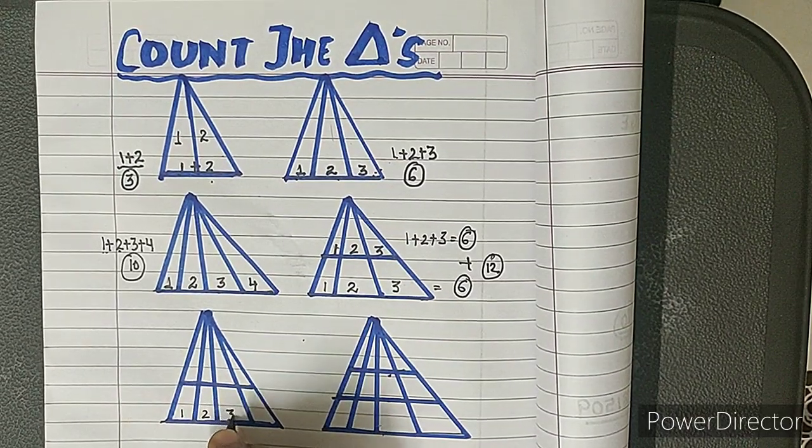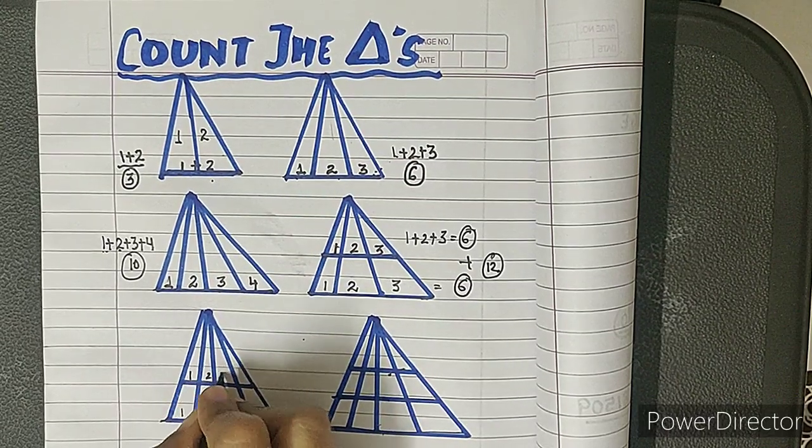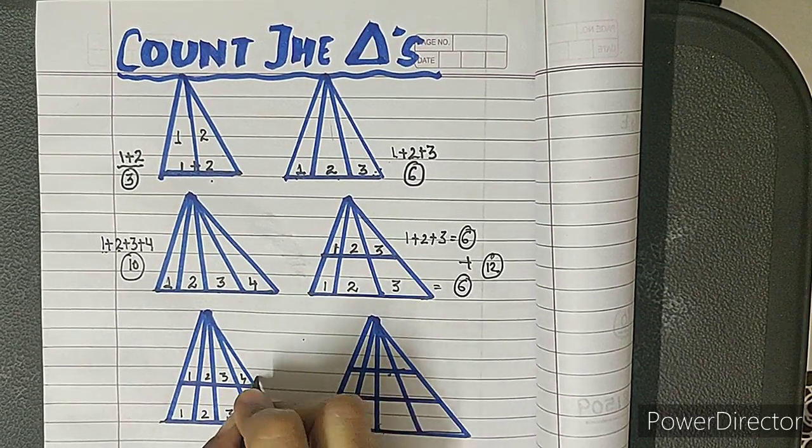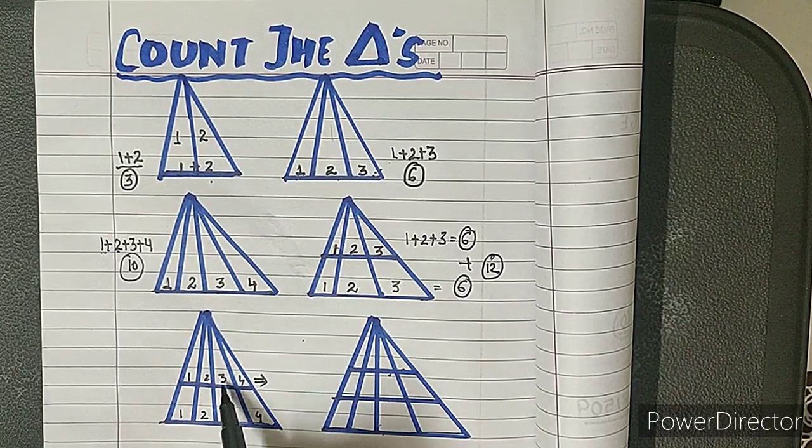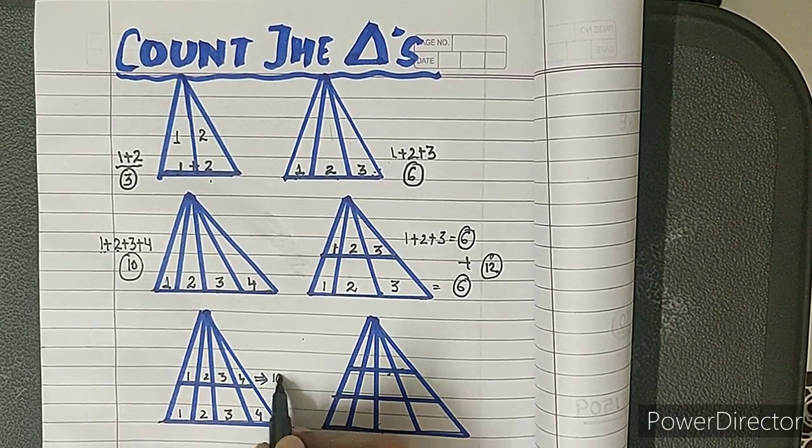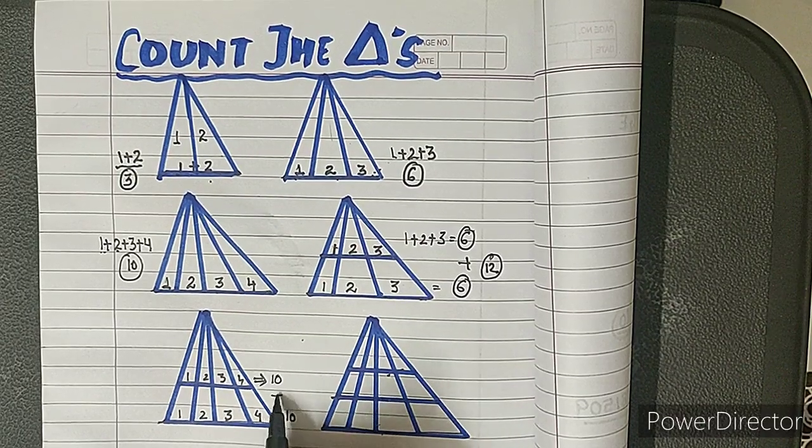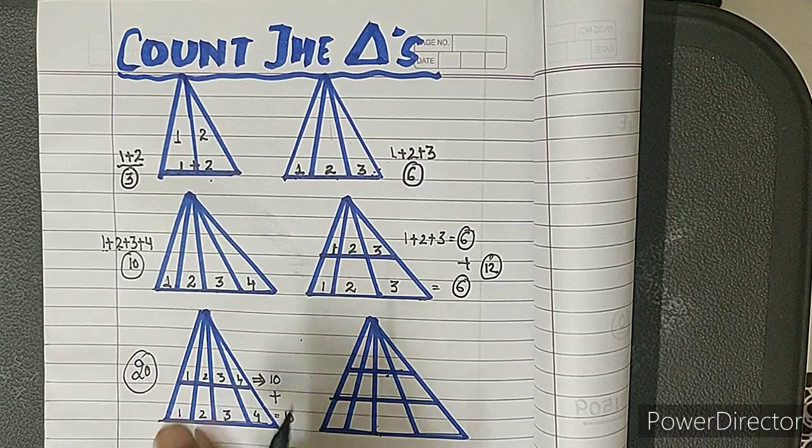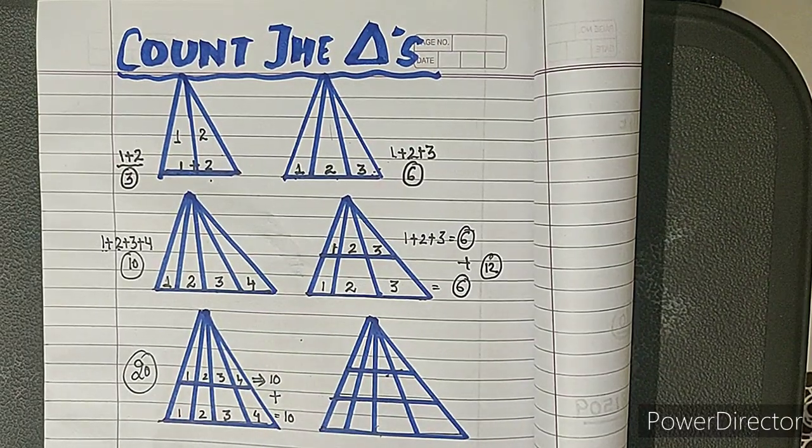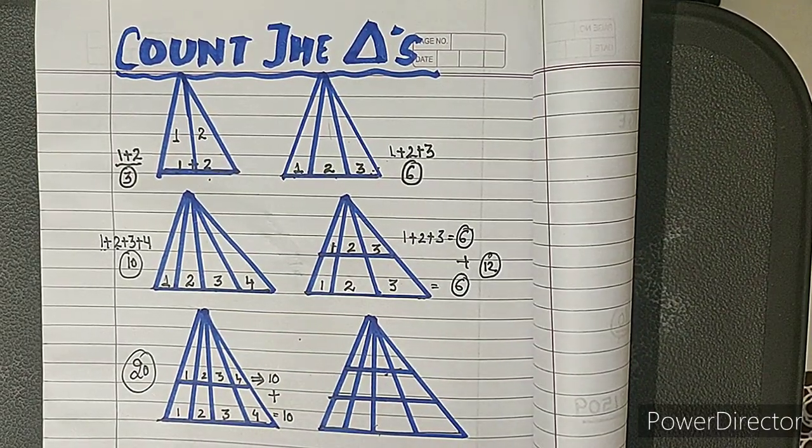Let's move to the next one. One, two, three, and four. One, two, three, and four. We are going to add them: one plus two is three, three plus three is six, six plus four is ten. Again we add this, which is ten. What is the answer? The answer is twenty. So this figure will have twenty triangles.